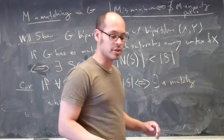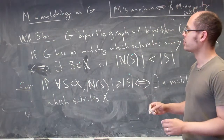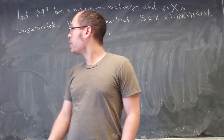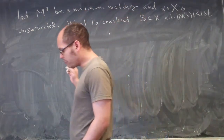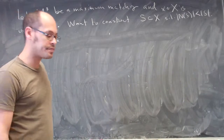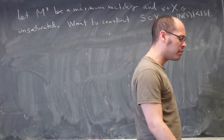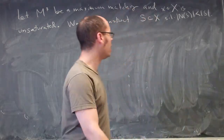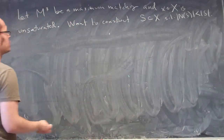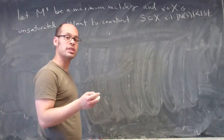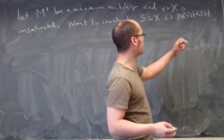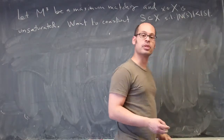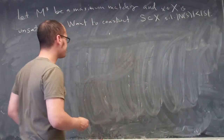Let's prove that. We start by considering M*, a maximum matching. We suppose that maximum matching misses some vertex in X — so there's some little x in X which is unsaturated. What we would like to do is construct a subset S of vertices of X such that the neighborhood of S has fewer elements than S itself.